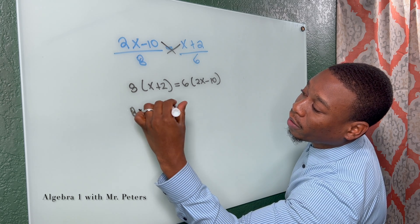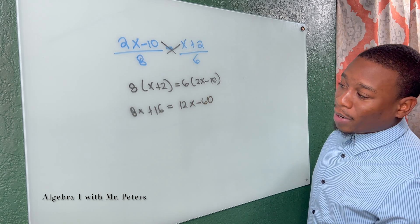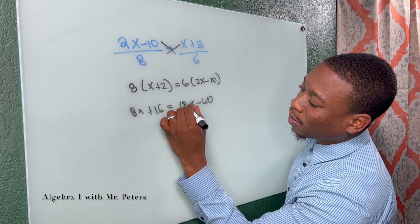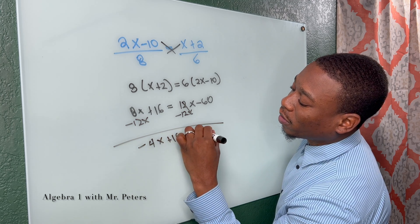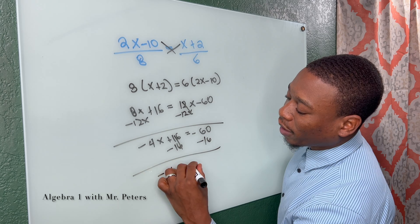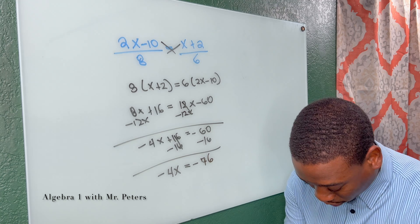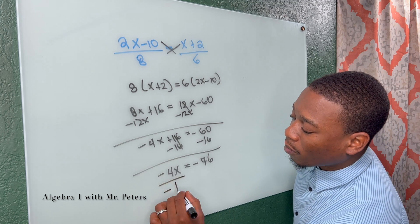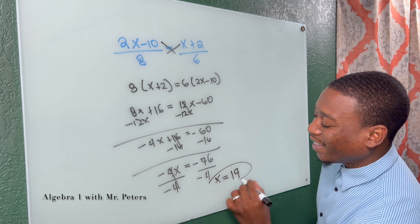So we have 8x plus 16 is equal to 12x minus 60. Now we combine like terms — subtract 12x from both sides to get negative 4x plus 16 equals negative 60. Once I subtract 16 from both sides, I get negative 4x equals negative 76. When we divide, both numbers are negative, so our answer is positive: x equals 19.